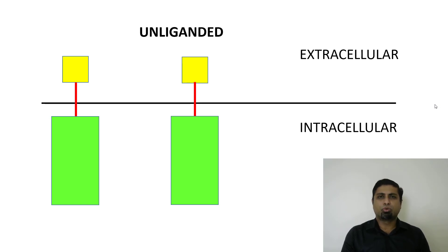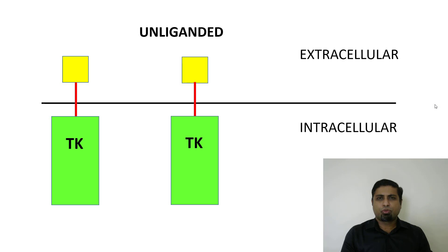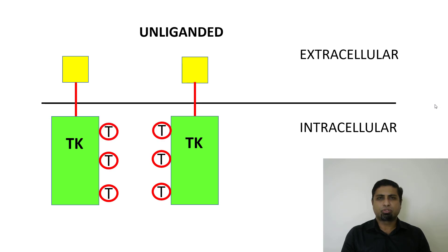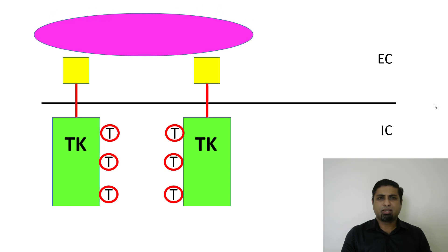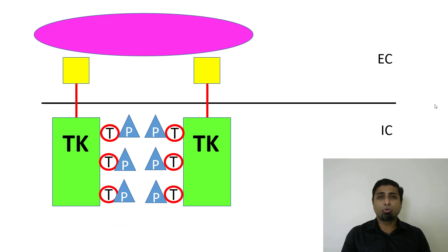The intracellular domain of these receptors has both a structural role and a functional role. The function played by these intracellular portions is tyrosine kinase activity. These receptors are proteins and therefore polymers of amino acids. When insulin binds to this receptor, the tyrosine kinase activity becomes active and causes phosphorylation of the receptor's own tyrosine residues — a process called autophosphorylation.